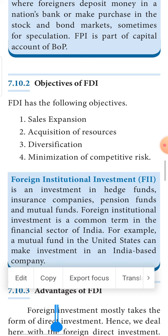The third objective is diversification. The home government will not have enough money to invest in different sectors. The government invests its capital in sectors which require prime importance — to meet the basic essentials of the people. It requires huge money and investment in diversified sectors, meaning not in one aspect but splitting money across different aspects. The government does not have that much capital, so foreign direct investment helps invest money in diversified sectors.